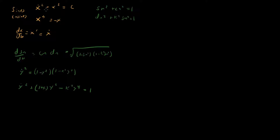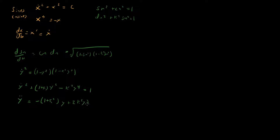We can take a derivative of this energy equation, just as we did for the harmonic oscillator to get Newton's second law. In this case we get: y-double-dot equals −(1 + k²)y + 2k² y³.